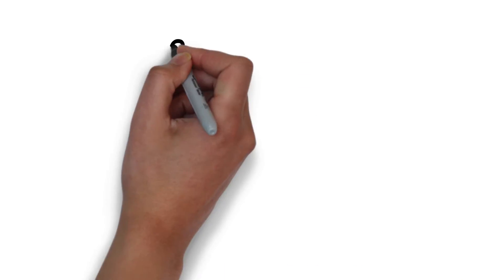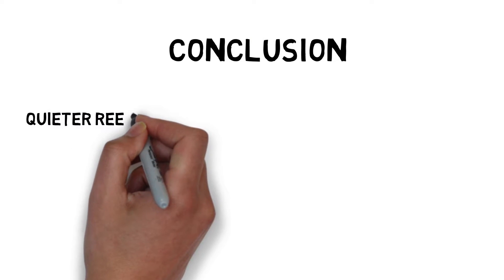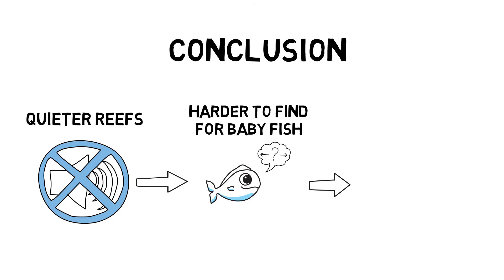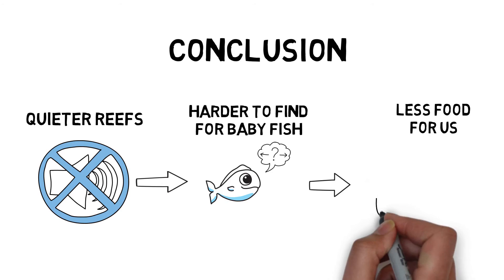This study has important consequences because if coastal reefs become quieter, this will also mean that it will be harder for baby fish to locate them and therefore reach them. Less fish along our coasts means less food for us.